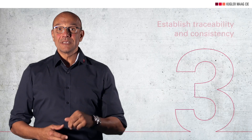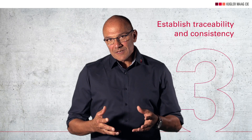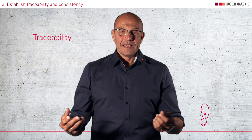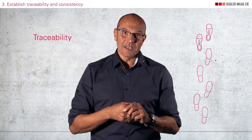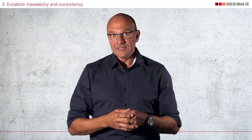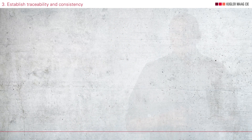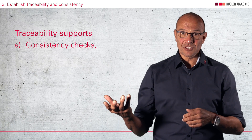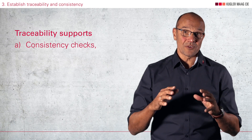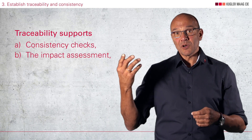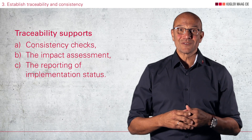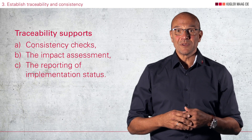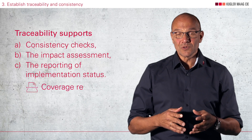Aspect number three: establish traceability and consistency. This process also requires that you ensure traceability between the software test cases and the software requirements. Traceability can be established through hyperlinks like in DOORS, through specific traceability tools like in Rectify, through traceability matrices, or through other manageable means which are supported by a tool landscape. The purpose of traceability is that it supports consistency checks, like for instance checking the completeness and correctness of the coverage of the software requirements, that it supports the impact assessment in case of change requests or bugs, and last but not least, it supports the reporting of stakeholder expectations and identifies which requirements have been tested — often referred to as coverage reports.